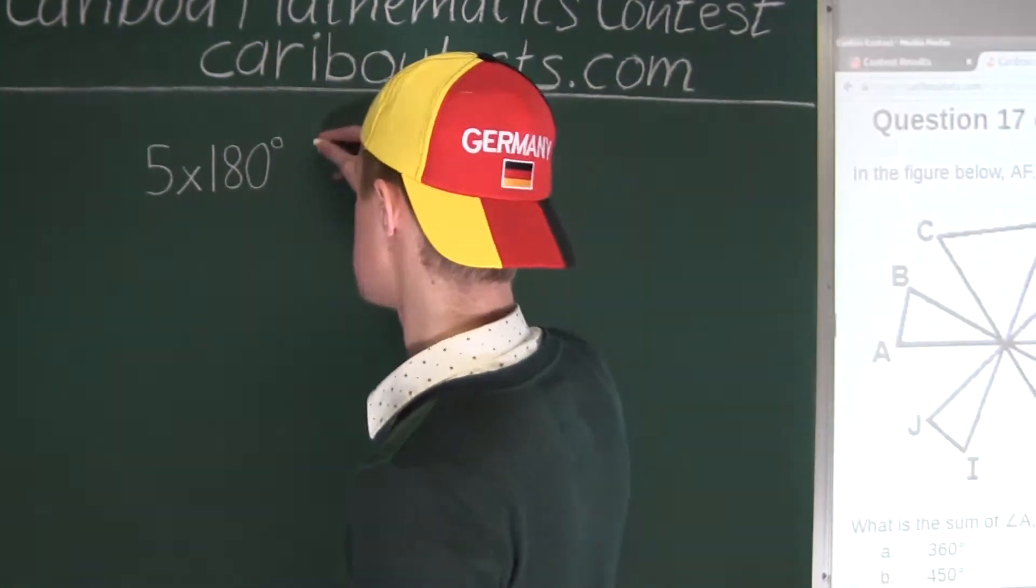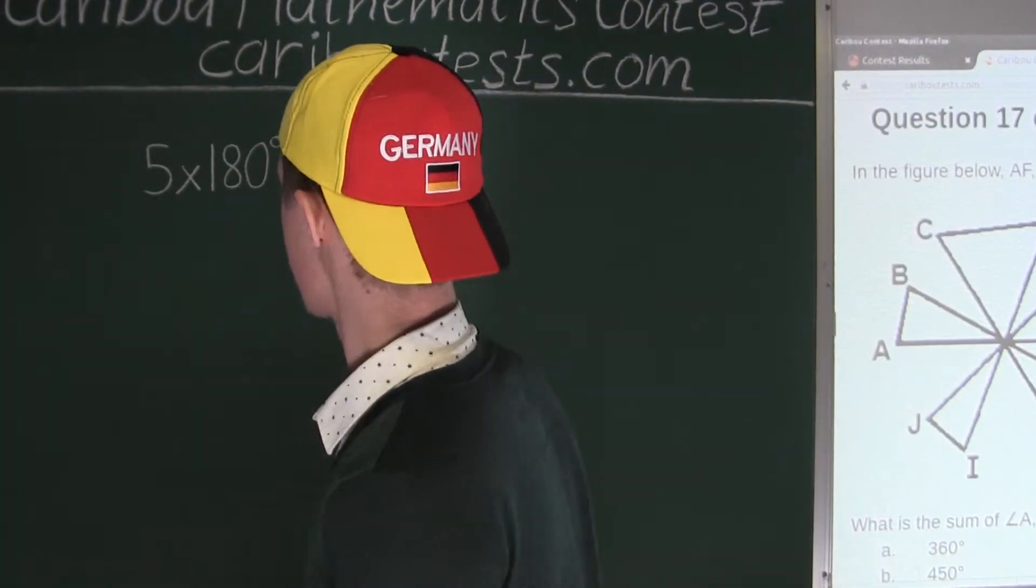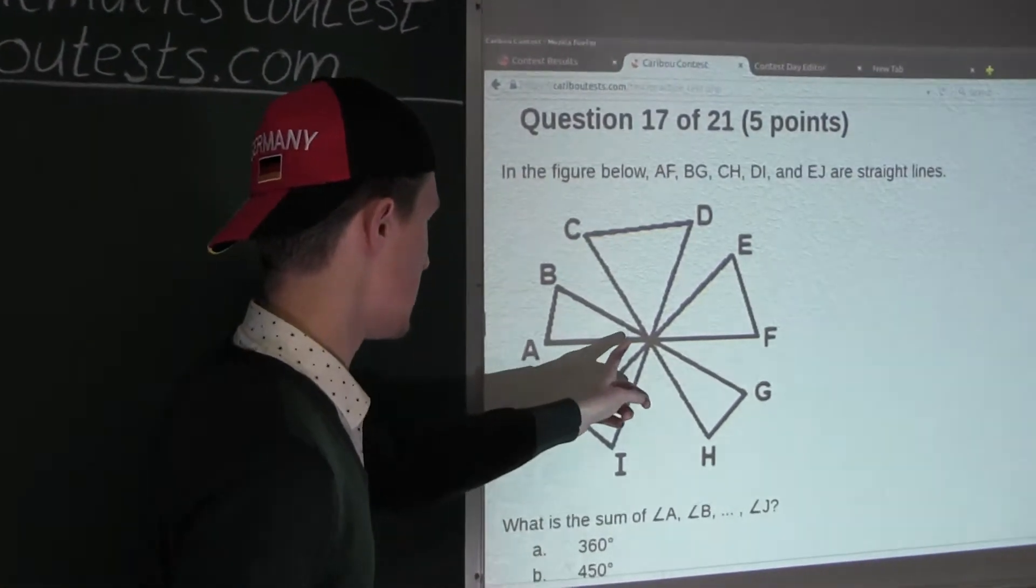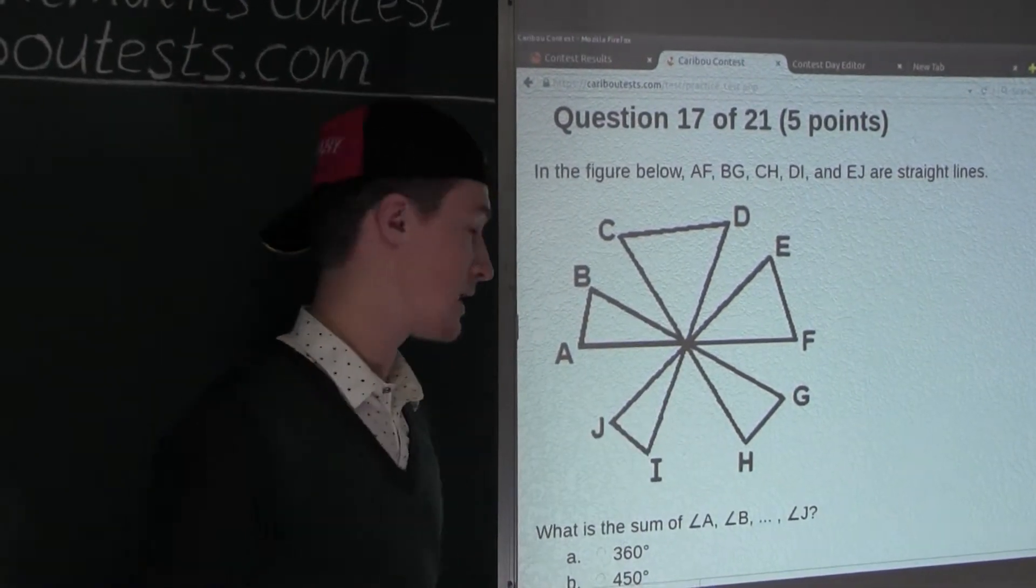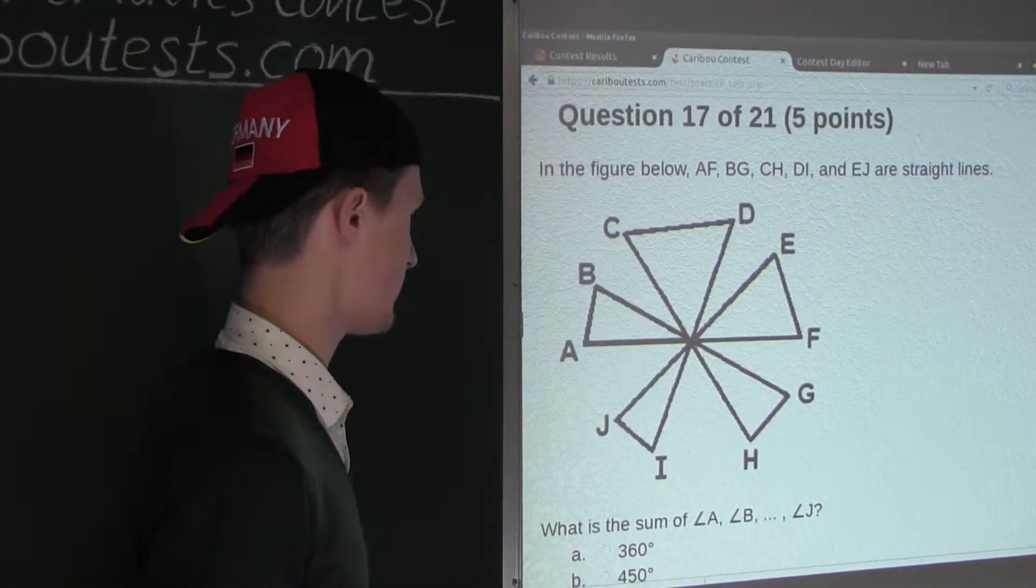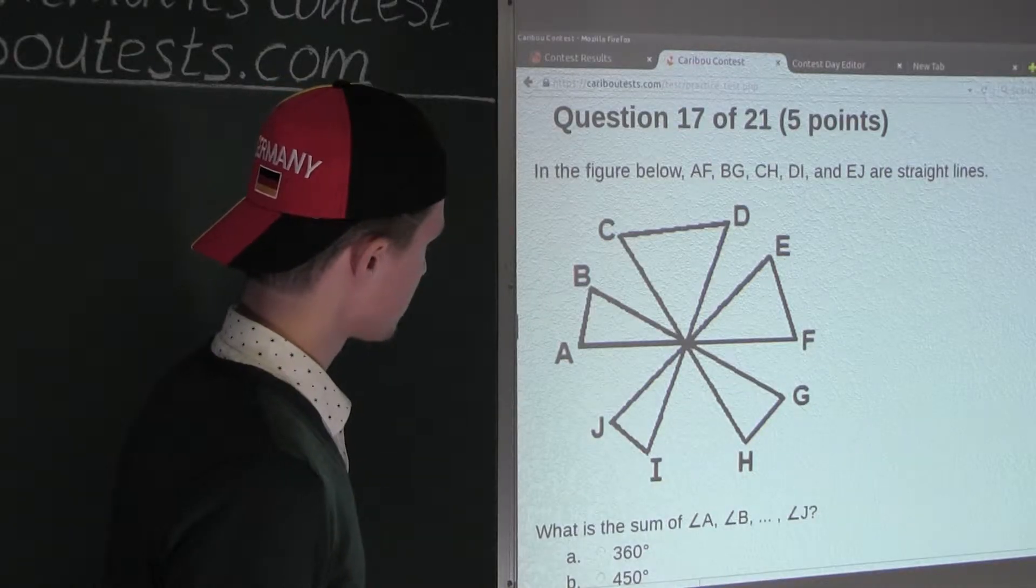And now we must subtract the sum of the five middle angles. So now we have to think, how can we figure that out?